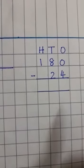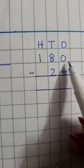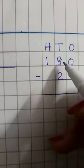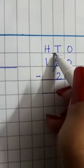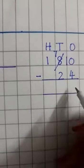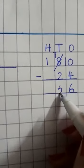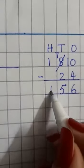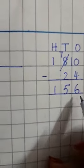Now we will write the place value: ones, tens, hundreds. Start from the ones side. Zero minus four — is it possible to minus four from zero? No, because four is bigger than zero. So we will take one from the tens side. Cut this eight, give one to the ones side. How many left? Seven. Now ten minus four is six. Tens side: seven minus two is five. Hundreds side: one minus nothing is one. So the answer is one hundred and fifty six.